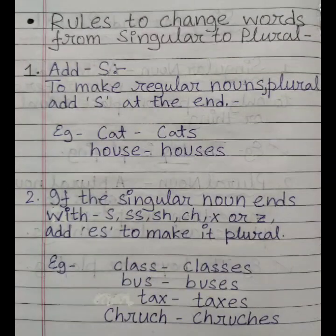Rules to change words from singular to plural. Number 1: Add S. To make singular nouns plural, add S at the end. Example: cat → cats, house → houses.